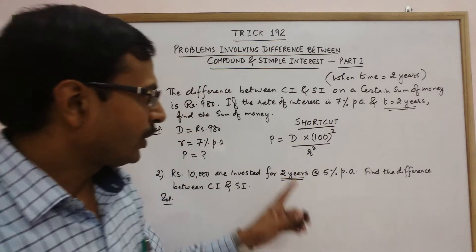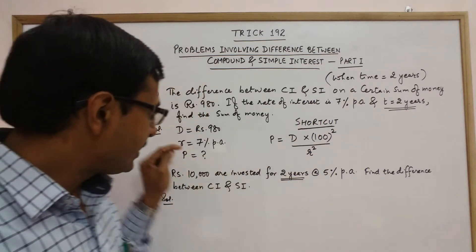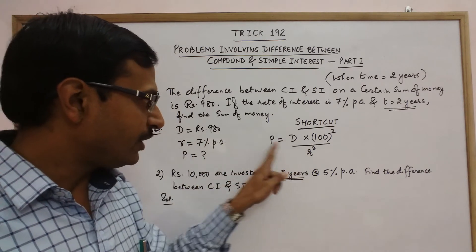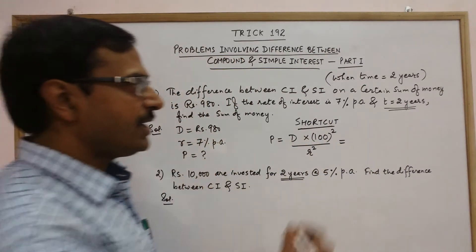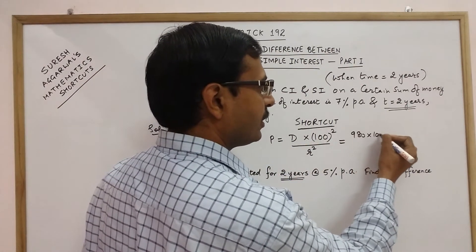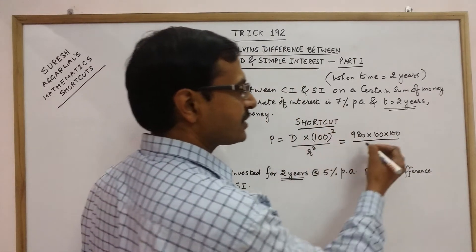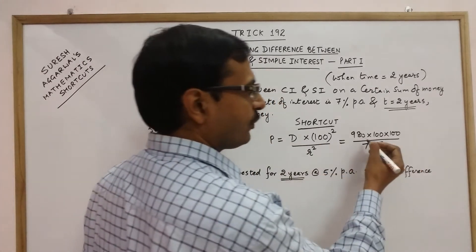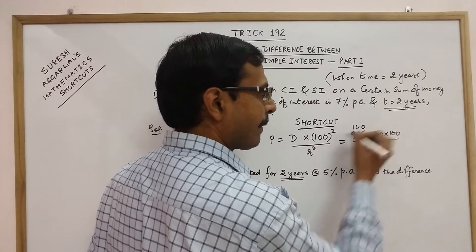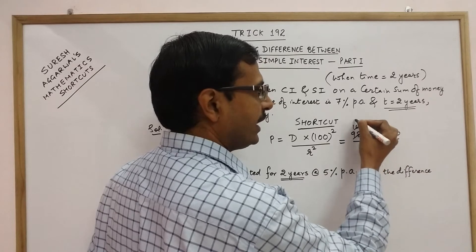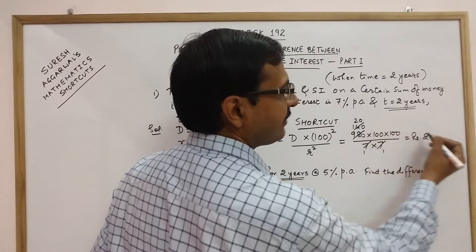By applying this formula you can easily find one variable when other two variables are given. In this case we are given D and R and we need to find P. So D difference is 980 into 100 into 100 upon the rate of interest given is 7%, so 7 into 7. If you cut 7 with 980 this will be 140 and again 7 goes 20 times, so here we have the answer rupees 2 followed by 5 zeros.